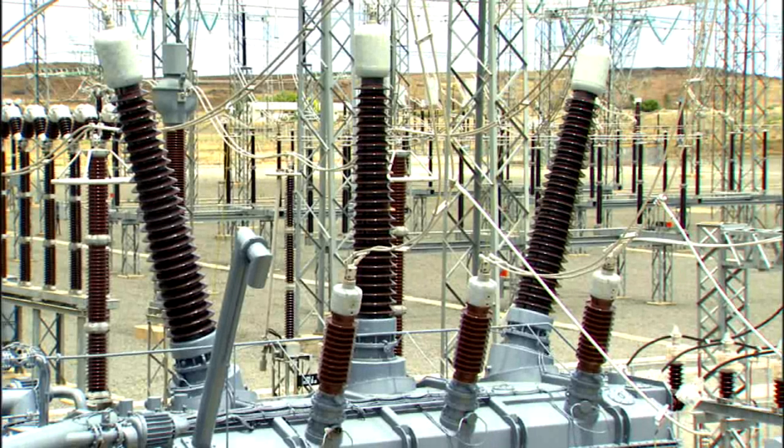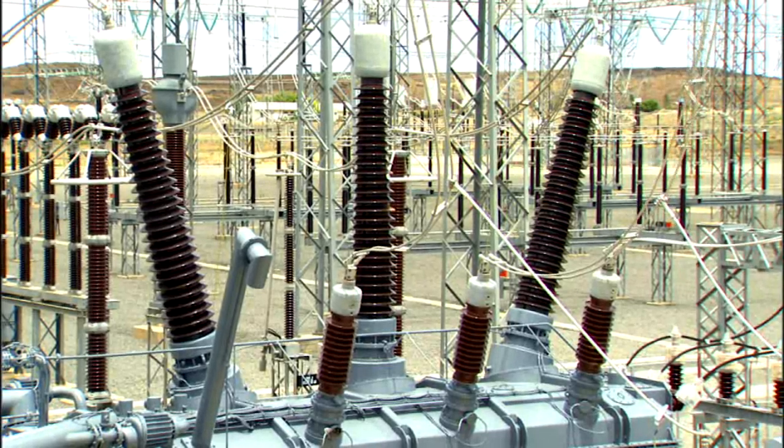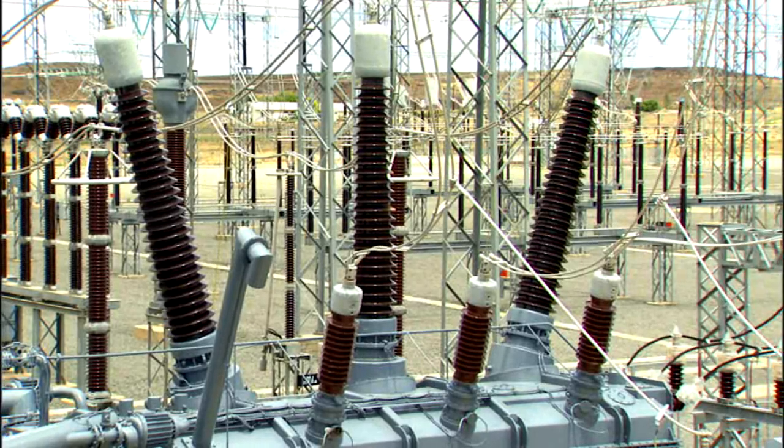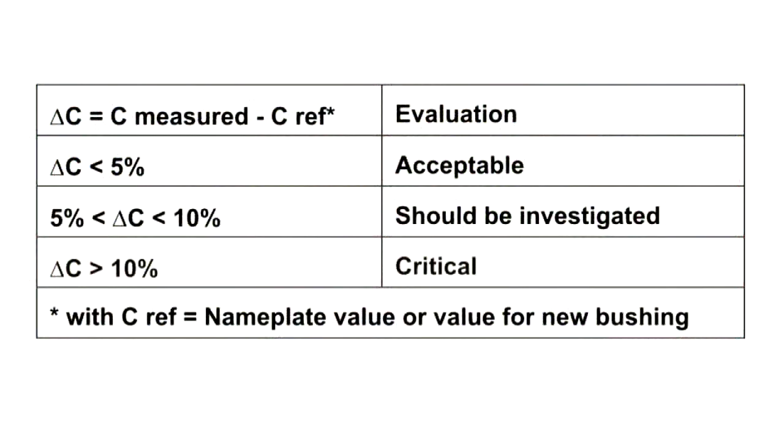For resin bonded paper bushings, cracks into which oil has leaked can also change the value of the capacitance. A rise in capacitance of more than 10% is normally considered to be dangerous since it indicates that the insulation distance is no longer sufficient.